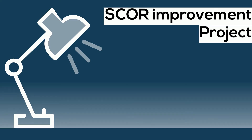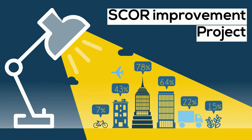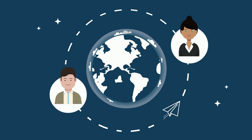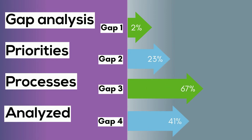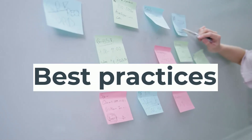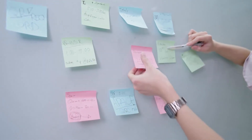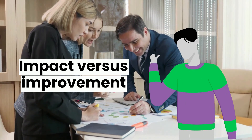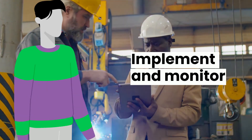During a SCOR project, a team starts with a high-level performance gap assessment, which can be identified by benchmarking or other information. For the identified gaps, priorities are established and processes are described and analyzed. After that, relevant best practices are analyzed for their contribution to the targeted performance improvement. Improvement projects are then defined and tested for their impact versus investment. The last step is implementing the improvement into the processes and analyzing the results.